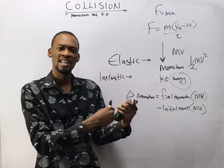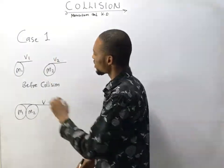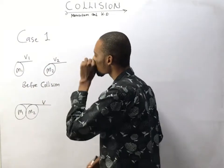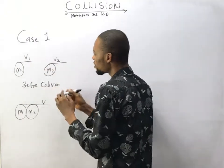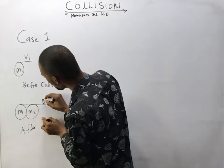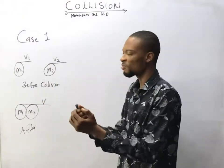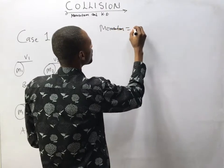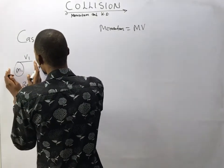Now let's take a look at different cases of collision and how their momentum and energy are calculated before and after impact. In Case 1, before collision, body m1 has its own mass and velocity v1, and body m2 has its own velocity v2 — both are moving. After collision, they come in contact, collide, and begin to move with one common velocity.